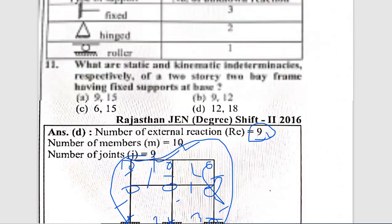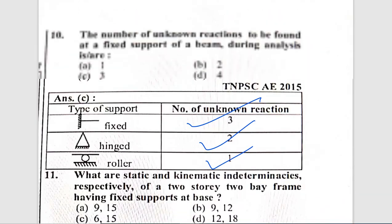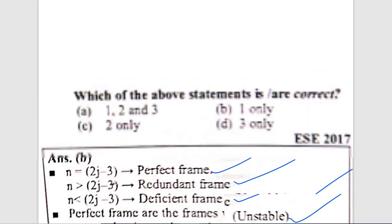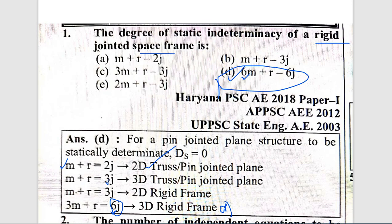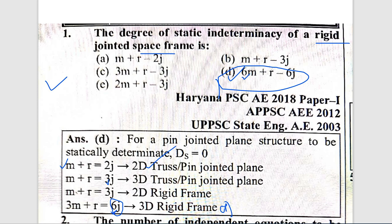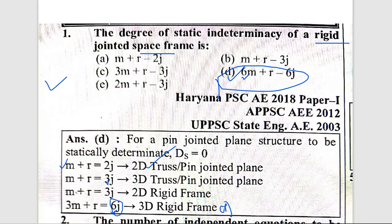These are some of the important questions from structural engineering for the APSCE Assistant Engineer exam — mainly covering degree of static indeterminacy and kinematic indeterminacy. Thank you for watching the video. Please like, share, and subscribe. Thank you.